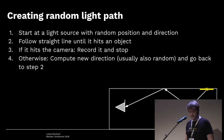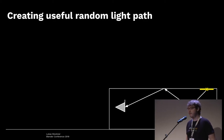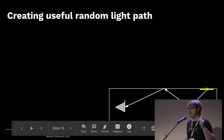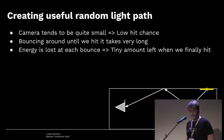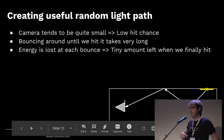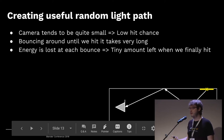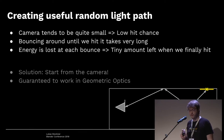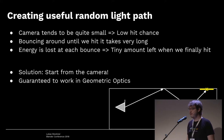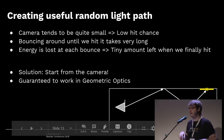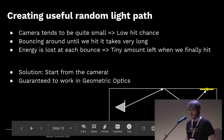In practice this doesn't work well because the camera is very small. The path is going to bounce a lot before actually hitting it, and at every bounce the path loses energy. So the solution is pretty simple — we can just reverse everything. In geometric optics, one of the results is that the path is reversible. So if we imagine the camera emitting something and eventually hitting the light, that also works — which means we can start from the camera, guaranteeing every ray is connected to it.